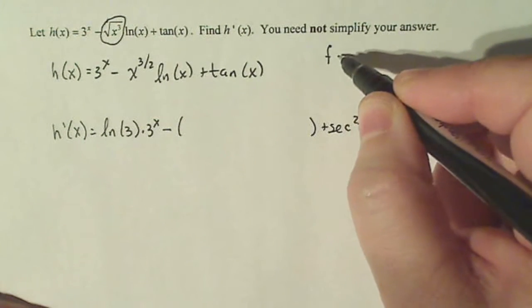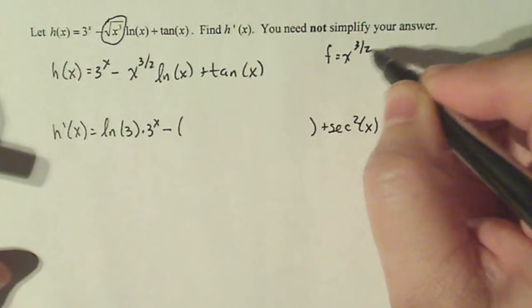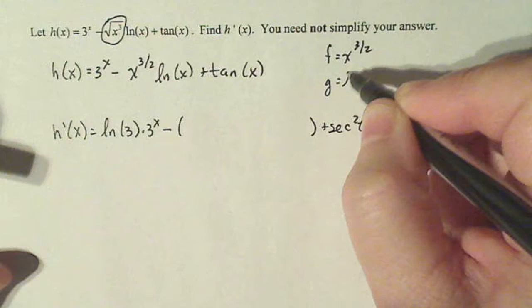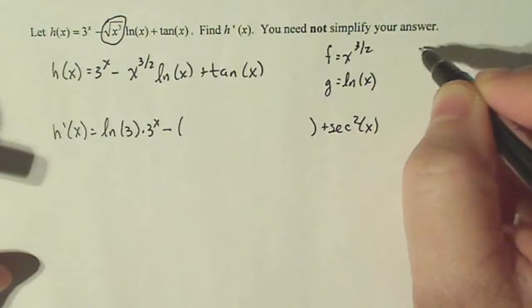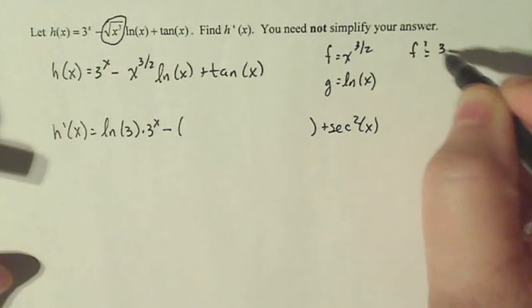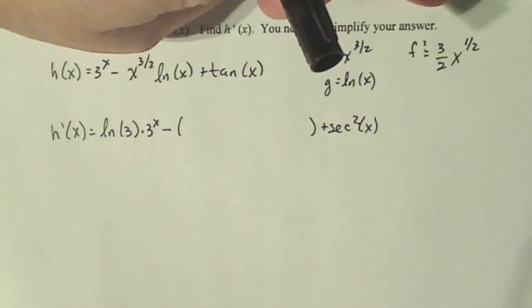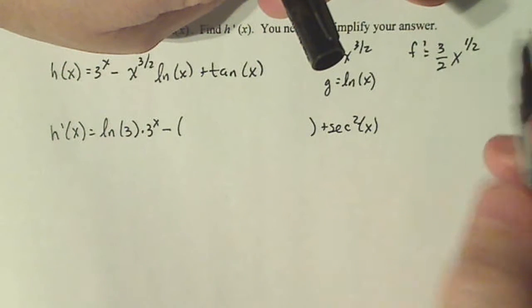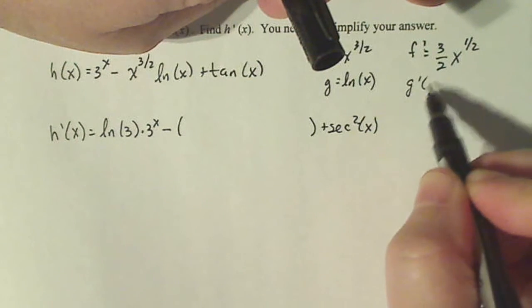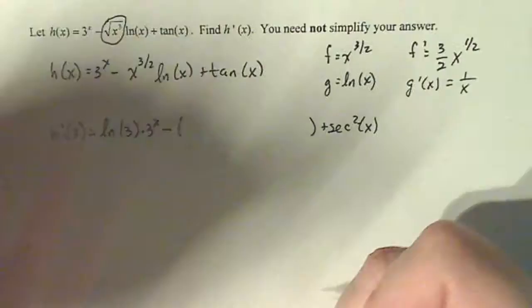So using the product rule, the first function would be considered x to the three halves. The second function would be considered natural log of x. F prime then would be using the power rule: three halves x to the one half because three halves minus one is one half, and then g prime of x is one over x.